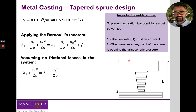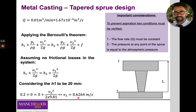Considering that the cross-sectional area at point 1, the entrance of the sprue, is much larger than the cross-sectional area at the exit, we can assume that the velocity at point 1 is much lower than at point 2 and approximately equal to zero. Using this assumption, we can calculate the velocity at point 2, the exit of the sprue, which equals 0.6264 metres per second.